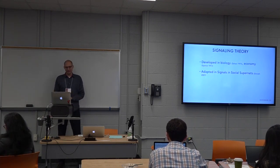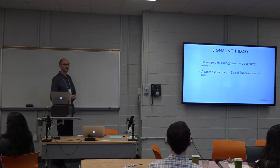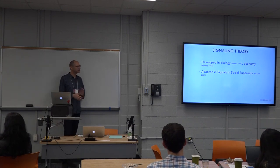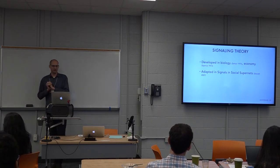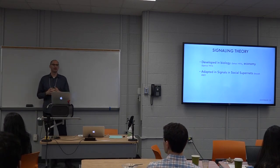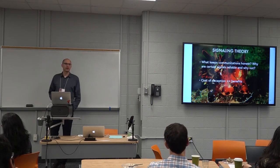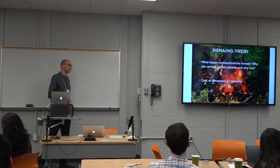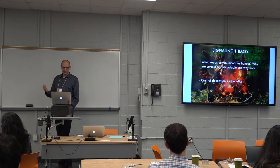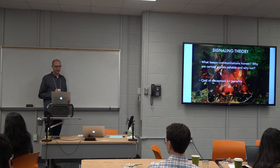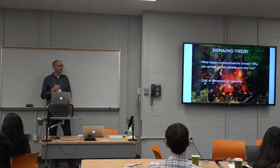Signaling theory has been at work for billions of years. We discovered it in economics in 1973 and in biology in 1975, though it wasn't widely accepted in biology until the 1990s. Judy Donath wrote very nicely about how it works in social systems. Signaling theory is obsessed with what keeps communications honest — why are certain signals reliable and honest, and when are they not? The core concept: the cost of deception must be greater than the benefit.